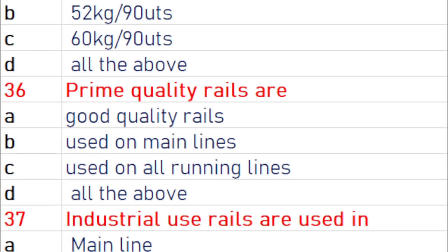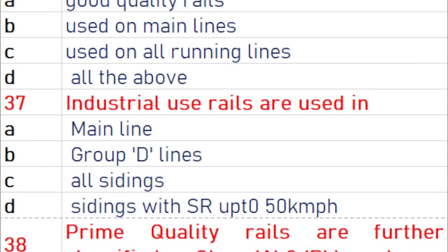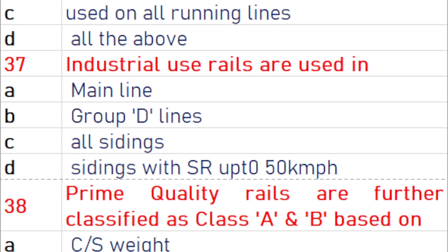Prime quality rails are good quality rails. Industrial use rails are used in sidings with a speed restriction up to 50 kmph.